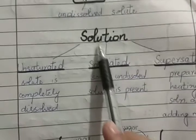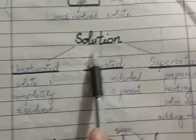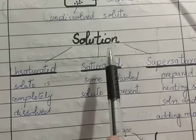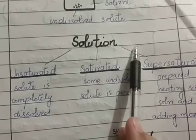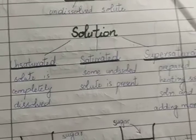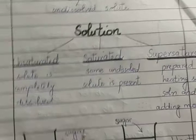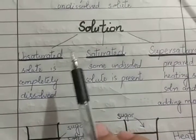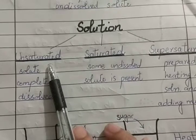Yesterday you studied the definition of a solution — it is a homogenous mixture of two or more components. One component is the solute and the other is the solvent. Solute is present in lesser quantity and solvent is present in larger quantity.